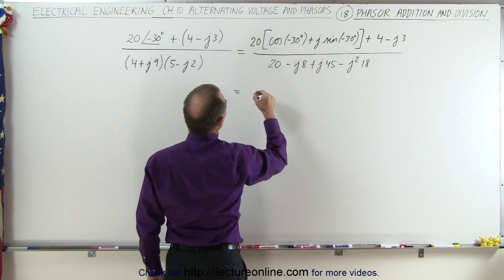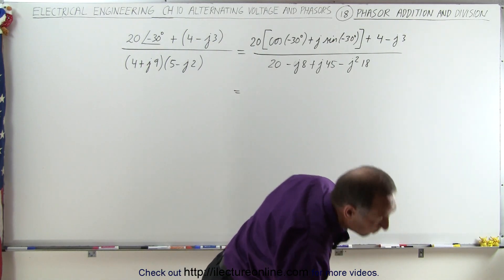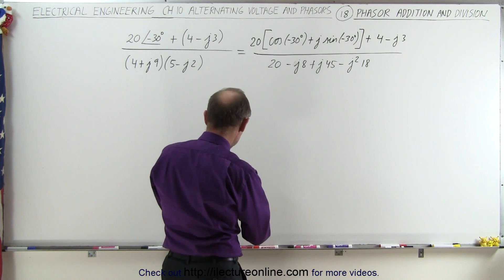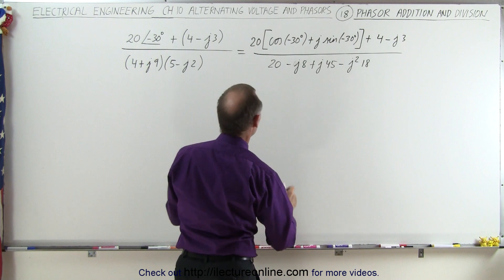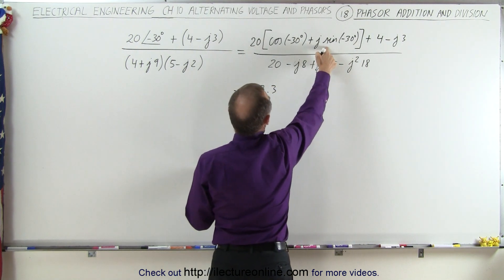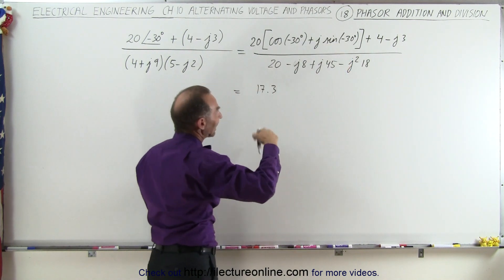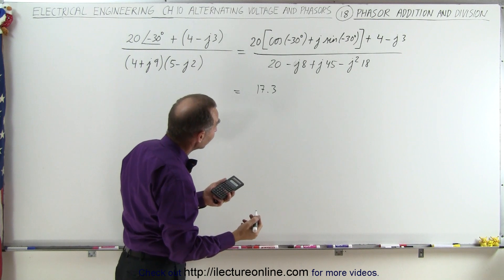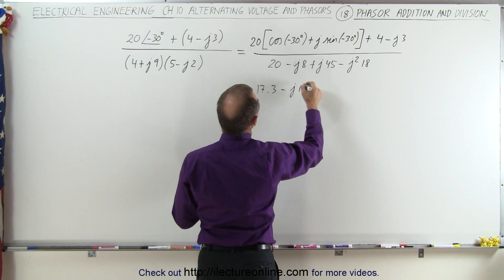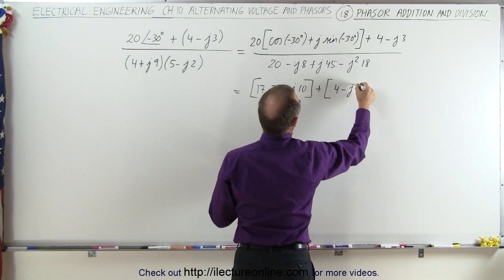Simplifying this a little bit more. In the numerator, the cosine of minus 30 is the same as the cosine of 30. We multiply times 20, that gives us a real part of 17.3. And if we multiply times the sine of negative 30, that's the same as negative sine of 30, which is 0.5 — so that gives us minus j times 10. And that's going to be added to 4 minus j times 3.